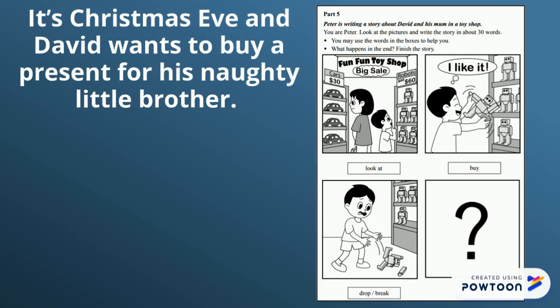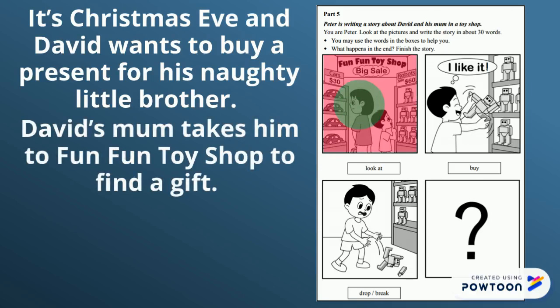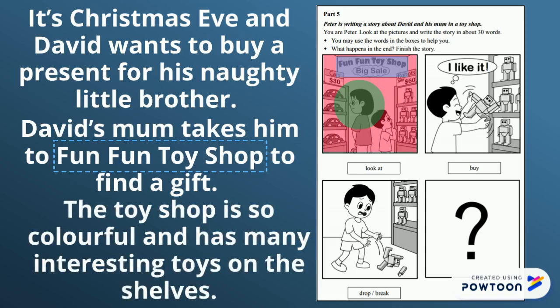Now I have my introduction. What can I see in the pictures? David's mum takes him to Fun Fun Toy Shop to find a gift. They have given me the name of the toy shop so I write it down. The toy shop is so colorful and has many interesting toys on the shelves. Here I have mentioned what it looks like inside the toy shop and what he can see.